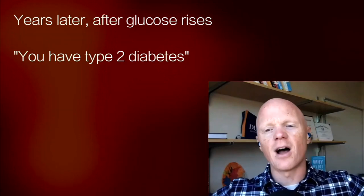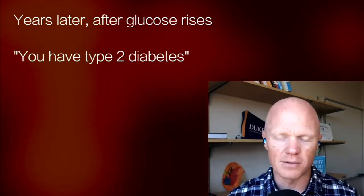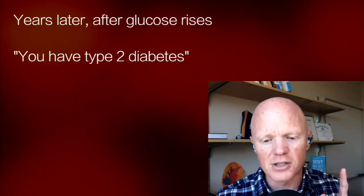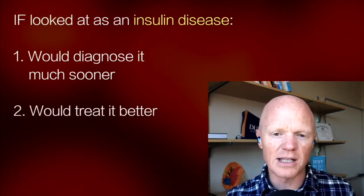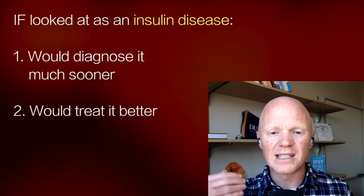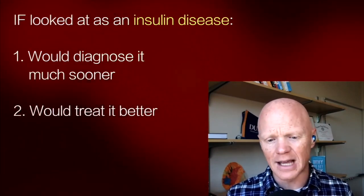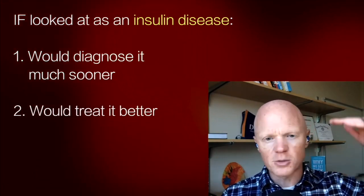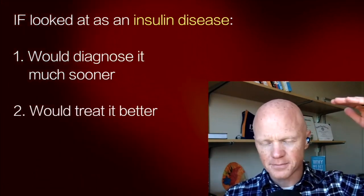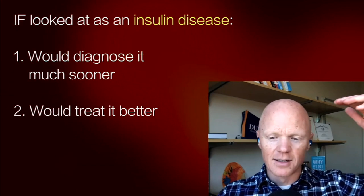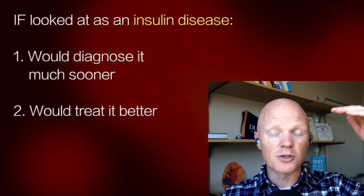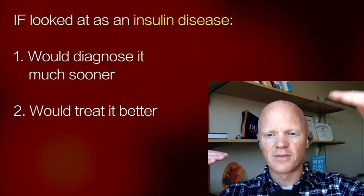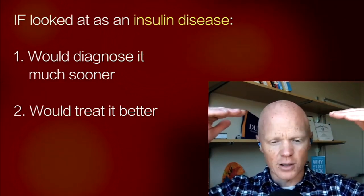Then they detect the problem and say you have type 2 diabetes now. The first tragedy is that by looking at type 2 diabetes as a glucose disease, we detect it too late — potentially decades later. If we'd looked at it as an insulin disease, we would detect it much sooner. And second, if we looked at it as an insulin disease, we would treat it better, because the type 2 diabetic has very high insulin and very high glucose.